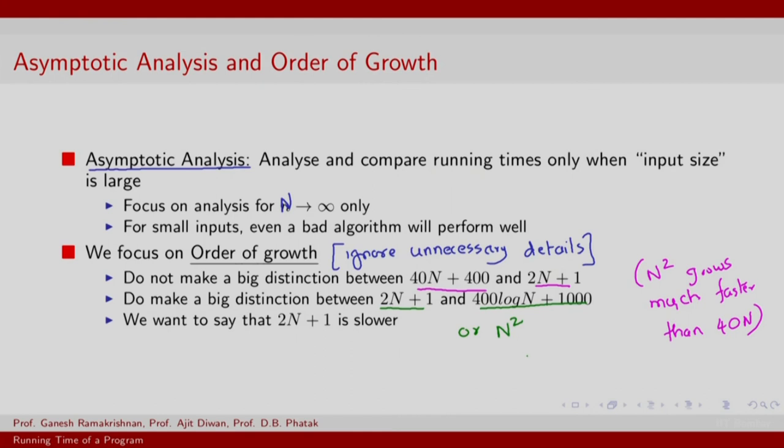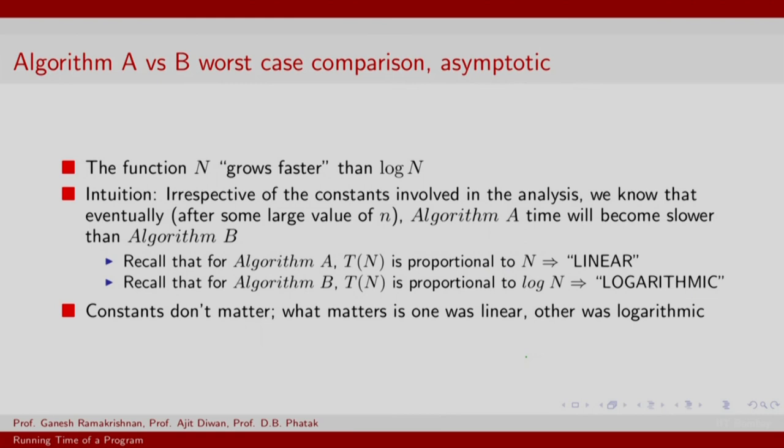So the order of growth is really based on what we want to distinguish from what. We want to be able to say that 2N plus 1 is slower than 400 log N plus 1000 and it is faster than N square. How do you say that? The intuition is as follows. The intuition is that function N grows faster than log N. So we are talking about rate of growth. For those who are familiar with calculus, you could look at the derivative.